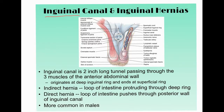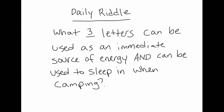The inguinal canals are two passageways in the groin area that contain the spermatic cords. This is a common site for hernias, where part of the small intestine or fatty tissue can break through the front of the abdominal wall. It is painful, requires avoiding weight lifting for a while, but can be cured with surgery and is very common in males.